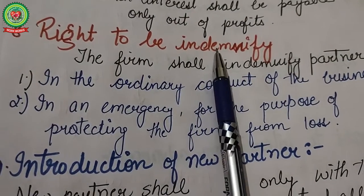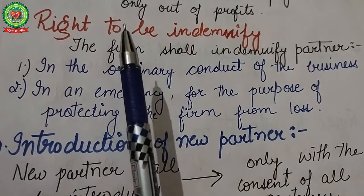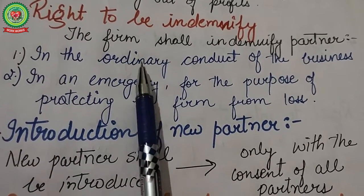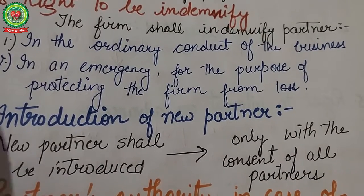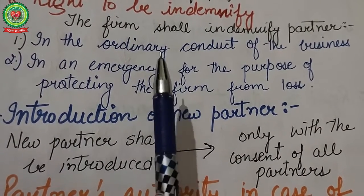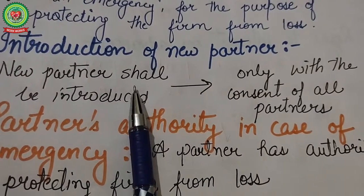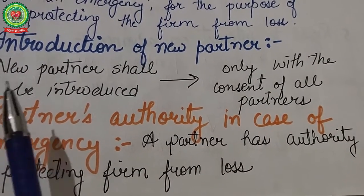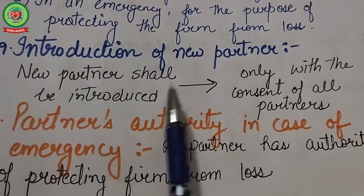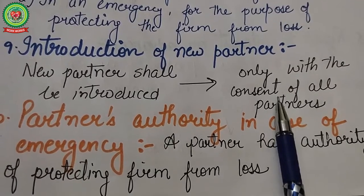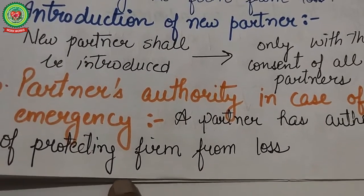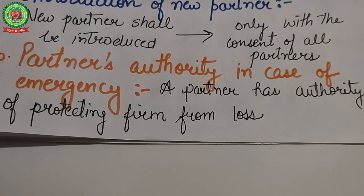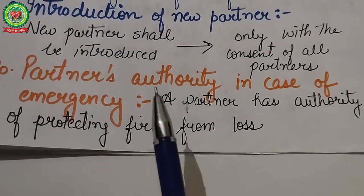Next is the right to be indemnified: the partner should be indemnified in respect of payments and liabilities incurred by him in the ordinary conduct of business or in doing such acts in an emergency to protect the business from liabilities. Next is introduction of a new partner: no new partner shall be introduced without the consent of all existing partners. Next is a partner's authority in an emergency: a partner has authority to protect the firm from any liabilities incurred at that time.